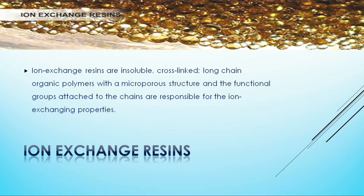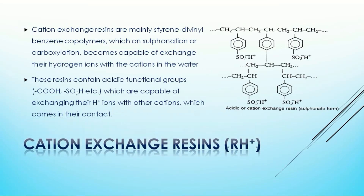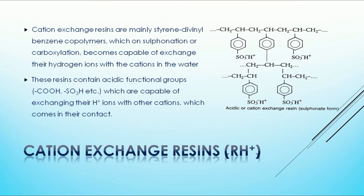Ion exchange resins are of two types: cation exchange resins and anion exchange resins. Cation exchange resins are helpful to remove cations from water. These resins are made of co-polymer like styrene-divinylbenzene, which on sulfonation or carboxylation becomes capable of exchanging their hydrogen ions with cations in water. So functional groups like -COOH or -SO3H are actually capable of exchanging H+ ions with other cations from water. These cation exchange resins are generally represented as RH+, that is resin with replaceable H+ ions.